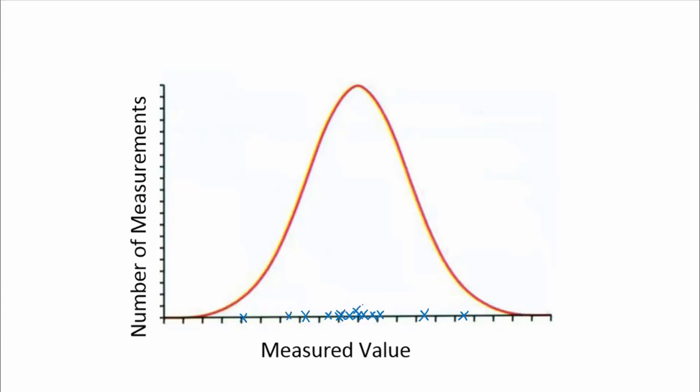that most of them would be clustered in the middle. And you would have fewer as you went further away from the mean value, which for a normal distribution would be right in the centre.